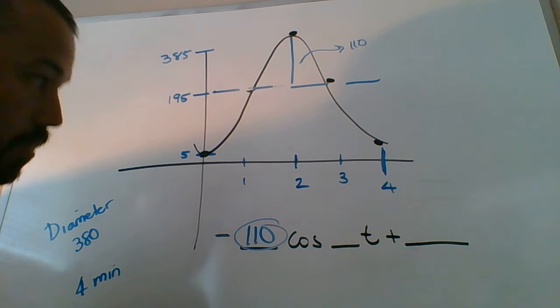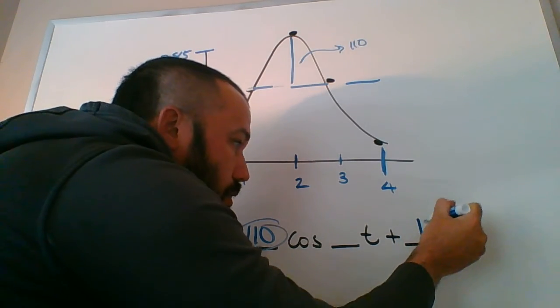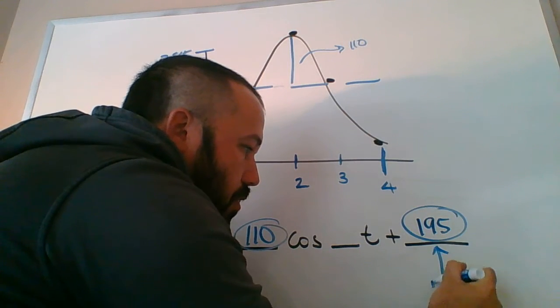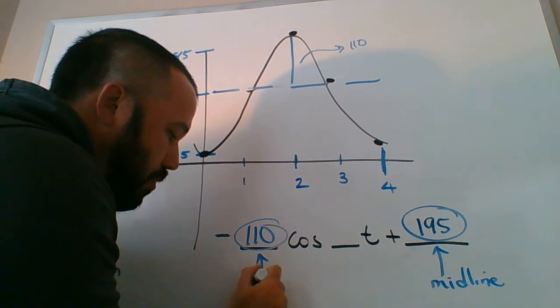The last number is always the middle. You can see that the center or the middle of this thing was at 195. That's the vertical shift - this is the midline, and then this is the amplitude.